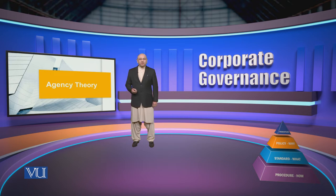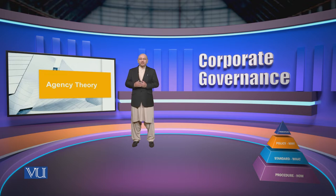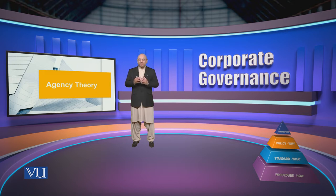In our last session we were basically talking about the different theories of corporate governance and we saw that there are eight different types of theories. In each theory there are many different elements, different variables, and most importantly a different texture and contextualization based upon the country or region in which that corporate governance theory is being created. The most important thing we looked at was that theories are not followed in isolation but actually they tend to overlap and many times they tend to create an amalgamation theory of corporate governance.